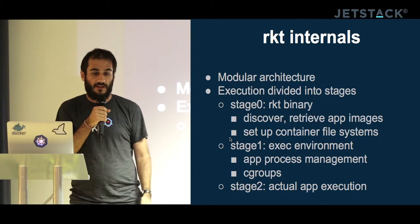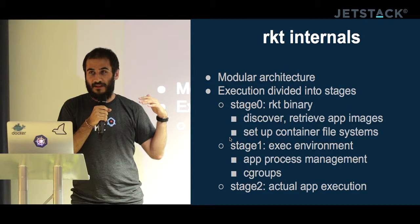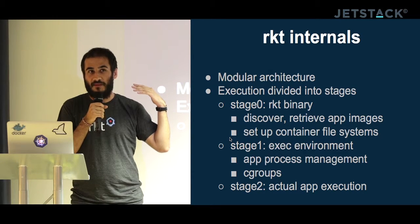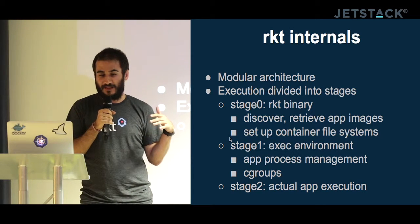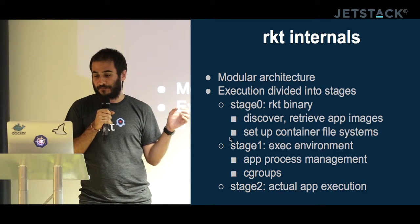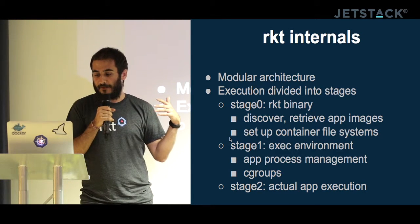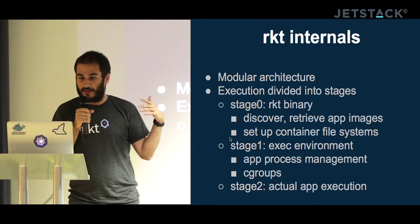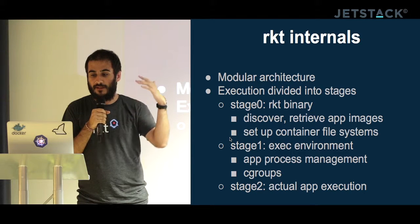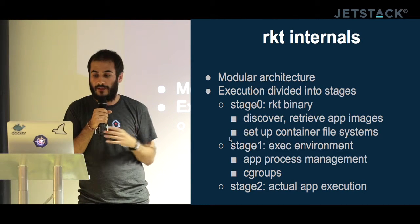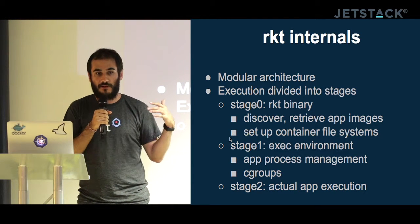By default, the stage one in Rocket is a minimal systemd instance. It's started by systemd and spawns service files for each app in your container. That's the default, but you can change it. We are working on a stable ABI between stage zero and stage one so you can use whatever else you want.